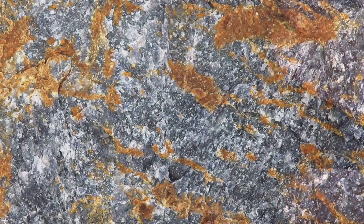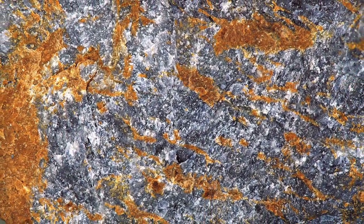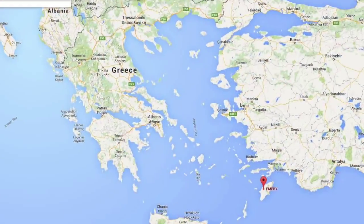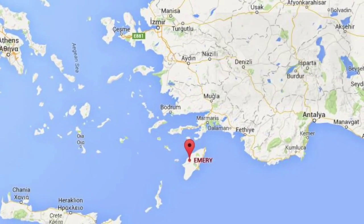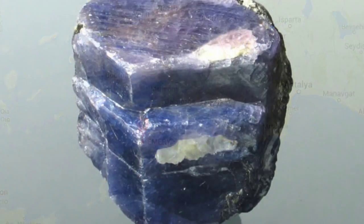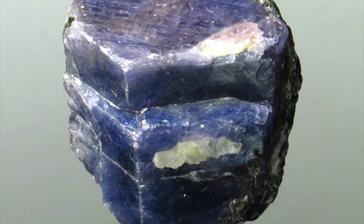Now emery is a very hard rock, and it's named after the place where it was discovered near Greece. Emery rock is mostly made up of corundum, which is naturally occurring aluminum oxide crystals.